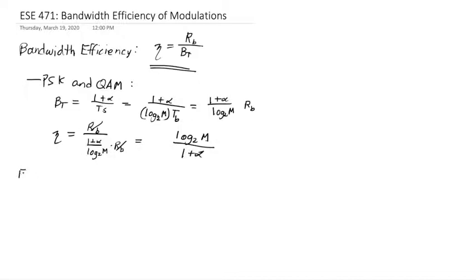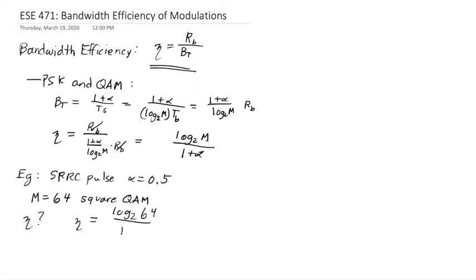So for example, if I have a square raised cosine pulse shape with an alpha of 0.5, and I may have, let's say, m equals 64 square QAM. So what is the bandwidth efficiency? Well, eta is log base 2 of m over 1 plus 0.5.